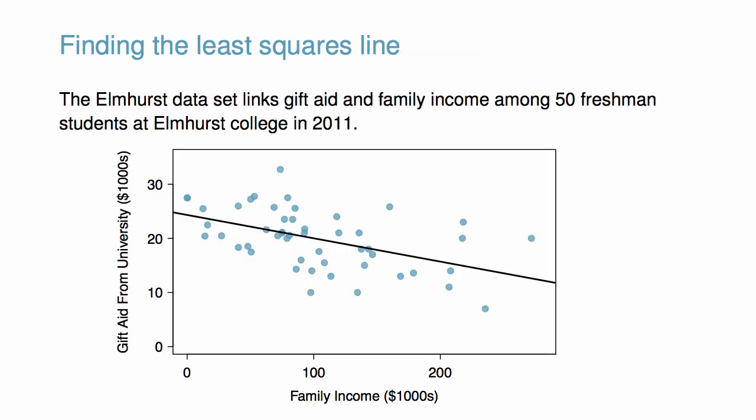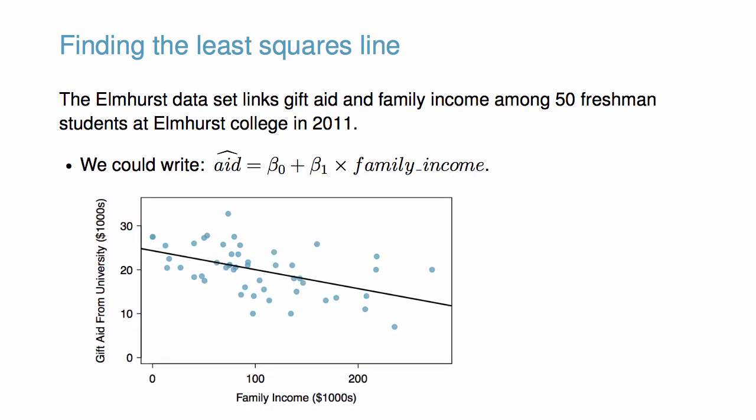The Elmhurst dataset links gift aid and family income among 50 freshman students at Elmhurst College in 2011. We are interested in exploring the possibility of a linear relationship between these variables. We could write the equation of the least squares regression line as follows: estimated aid equals intercept coefficient plus slope coefficient times family income.